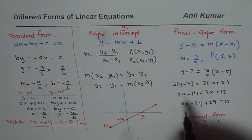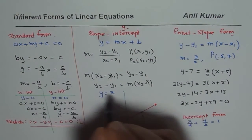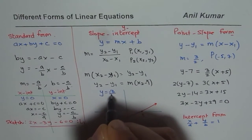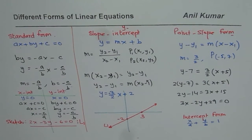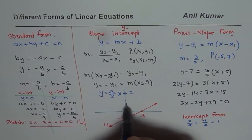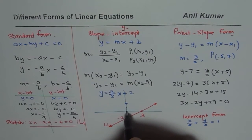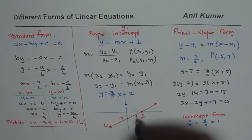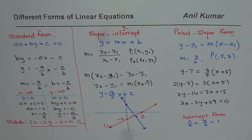From slope-intercept form, take the line y equals minus 3/2 x plus 2. The y-intercept is 2, so start at that point. The slope is minus 3/2, meaning go 3 units down and 2 units to the right to get the next point. Join these two points and that gives you the sketched line.